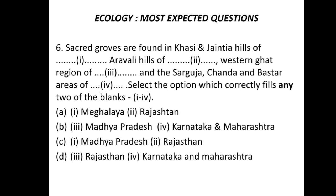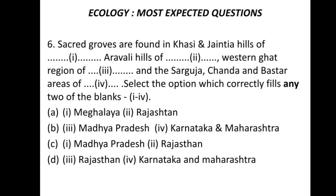For the sixth question, students who have properly read NCERT will find this immediately clear as this section comes directly from the text. Sacred groves are found in Khasi and Jaintia hills of fill-in-the-blank, Aravali hills of fill-in-the-blank, Western Ghats region, and the Sarguja, Chanda, and Bastar areas. Select the options which correctly fill any two blanks. The correct answer is option A: Meghalaya (for Khasi and Jaintia hills) and Rajasthan (for Aravali hills). Students should take time with this type of fill-in-the-blank question.